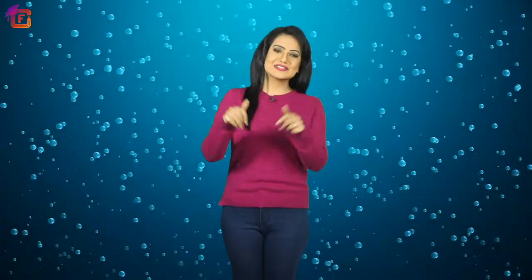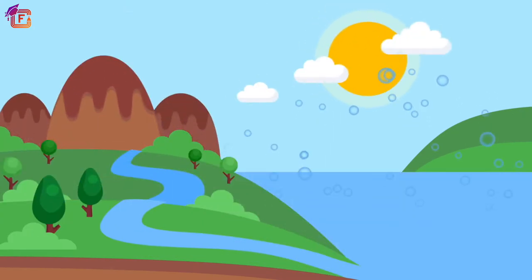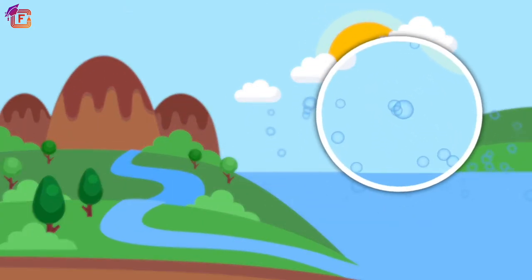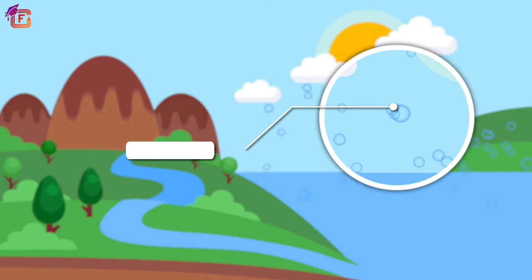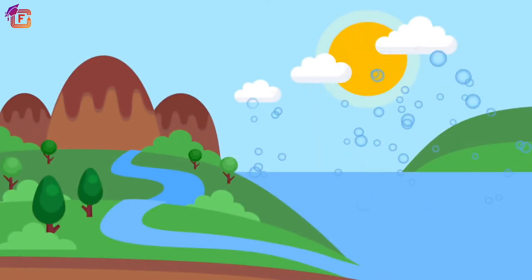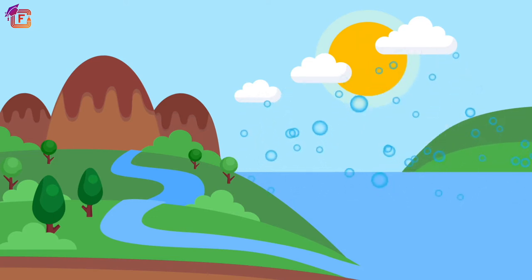Hello learners, welcome to the video. In this chapter we will learn about how clouds are formed. Clouds are formed when water vapors are converted into liquid water droplets by the process called condensation. As the air becomes cool, these